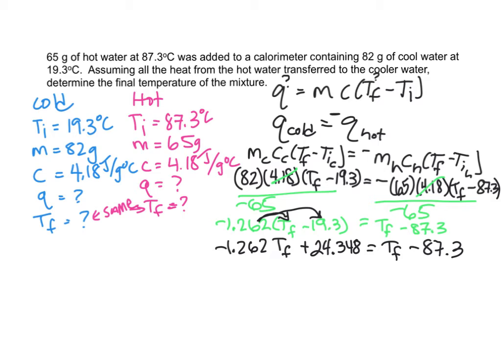And then from here, I'm just going to subtract 24.348 from both sides. And in addition, you can do these as two separate steps if you want. I'm going to subtract 1 tf over here. Subtract 1 tf over here. You can put a little 1 there. It'll make it a little clearer. Just make sure you have your signs right.